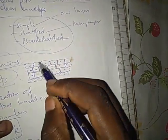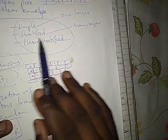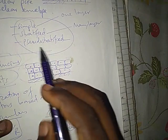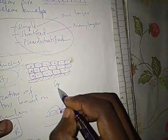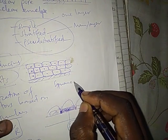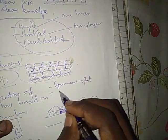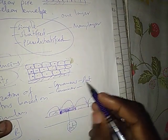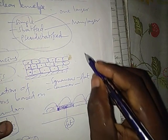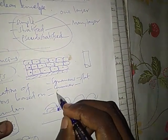And then regarding the next terms: 'squamous' means flat. 'Columnar' means the height is longer than the width. And you also have 'cuboid.'